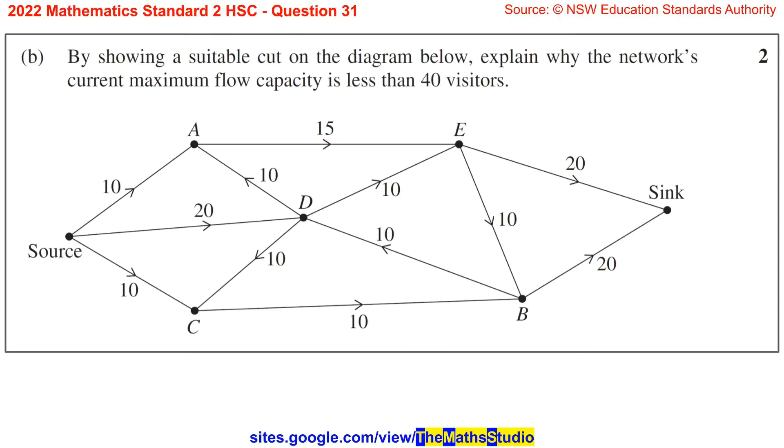Part B. By showing a suitable cut on the diagram below, explain why the network's current maximum flow capacity is less than 40 visitors.